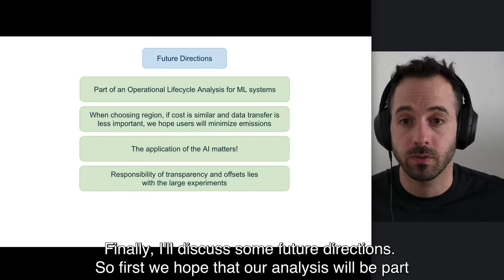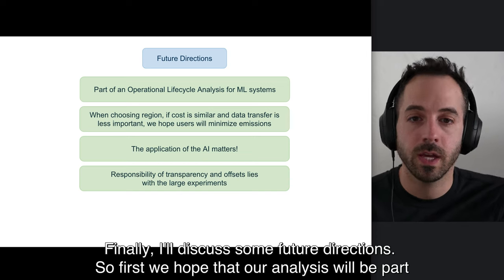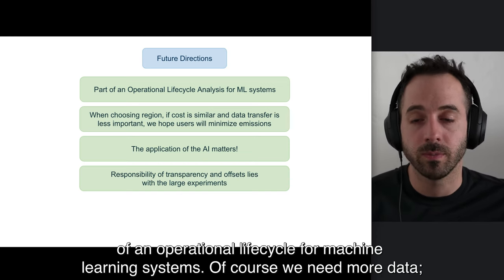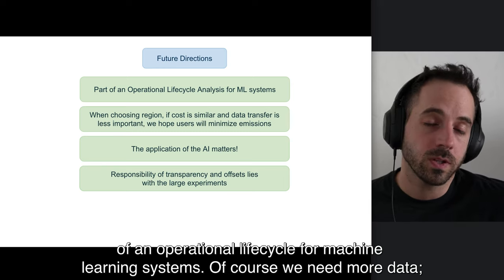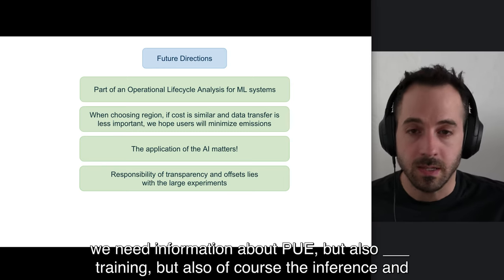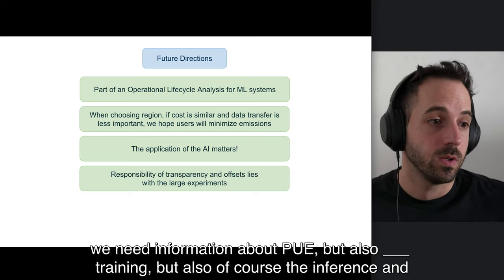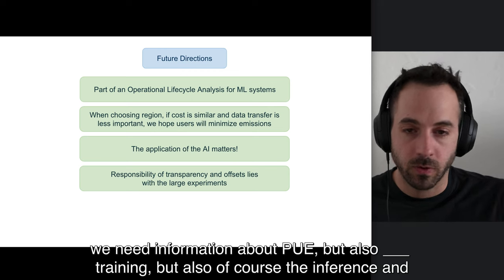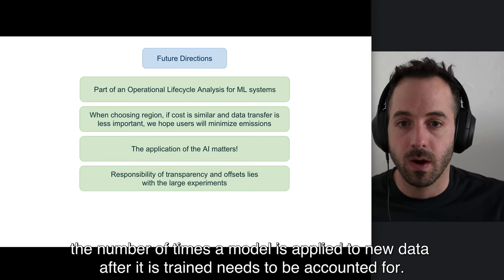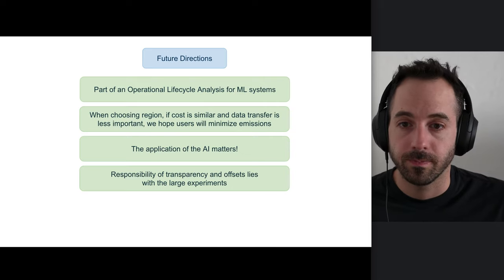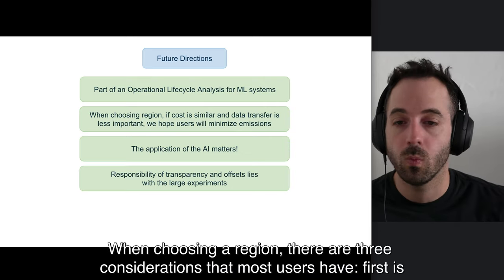Finally, I'll discuss some future directions. First, we hope that our analysis will be part of an operational life cycle for machine learning systems. Of course, we need more data. We need information about PUE, but also we just looked at training. And the inference and the number of times a model is applied to new data after it's trained need to be accounted for.